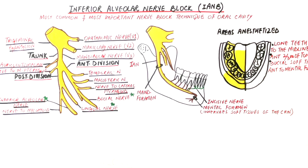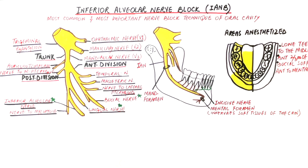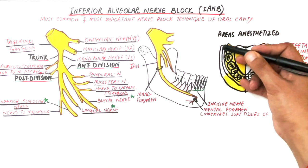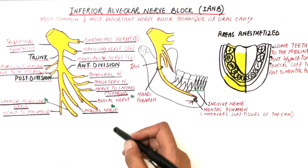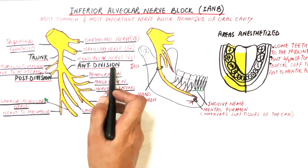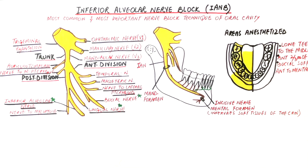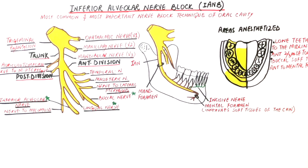The buccal soft tissues adjacent to molars are not anesthetized with the inferior alveolar nerve block. The reason is that the buccal nerve is a branch of the anterior division of the mandibular nerve and lies at a considerable distance from the inferior alveolar nerve, which is a branch of the posterior division of the mandibular nerve.